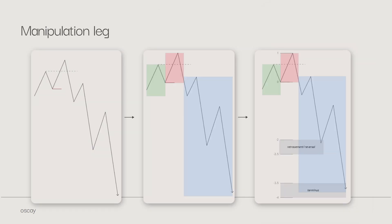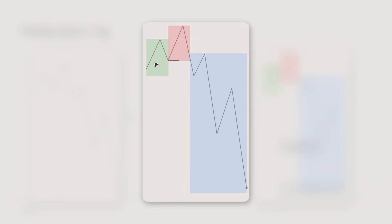So now I'll explain the manipulation lag, because we need this to project the standard deviations from. If you have not watched my video about my model, I recommend you do, because it will make things way more clear. Usually price accumulates, and then it manipulates — AMD: accumulation, manipulation, distribution. So we want to see a high get taken and then displace down. This will be our manipulation lag, because this is the latest lag that manipulated before making the real move.